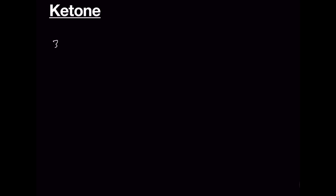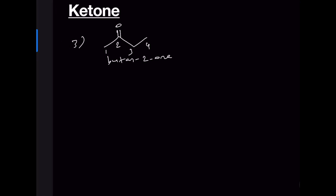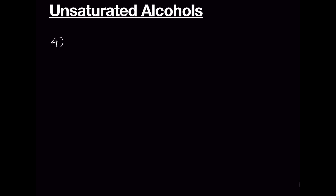Let's go to ketones. Only one ketone isomer is possible — butan-2-one. We can't have butan-3-one because if you do the numbering the other way around it becomes butan-2-one again. Therefore only one ketone isomer is possible.